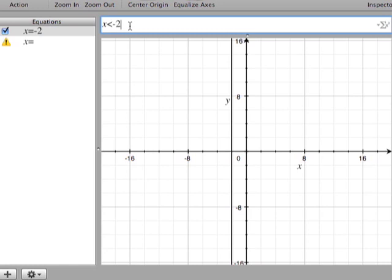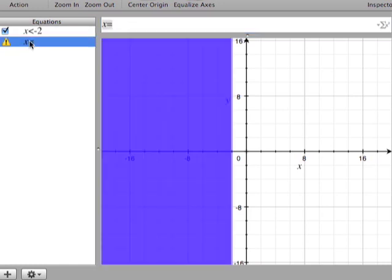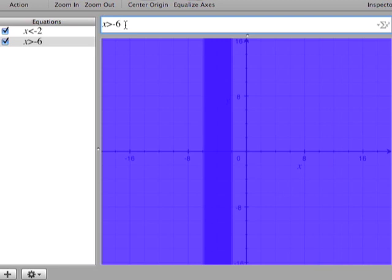This program does it for me. And we can do the same for negative 6, greater than negative 6. And you'll see, actually, that these two graphs intersect. And that's the solutions, that narrow blue, dark blue band in the middle.